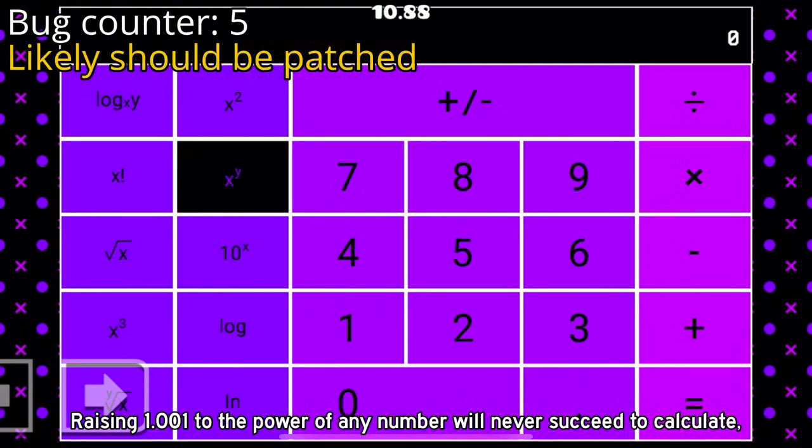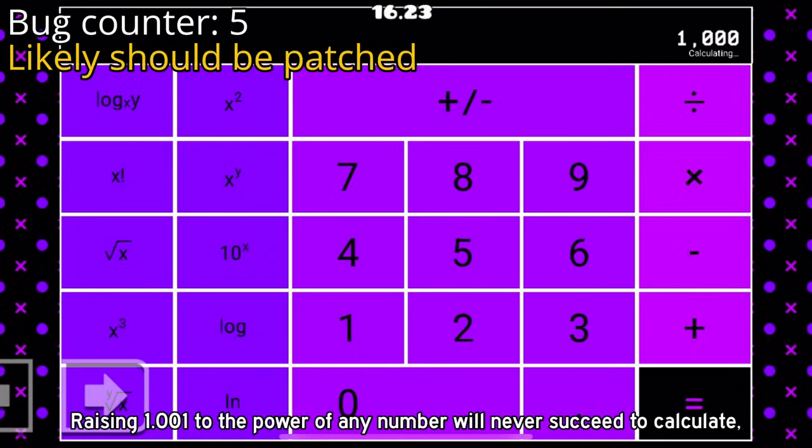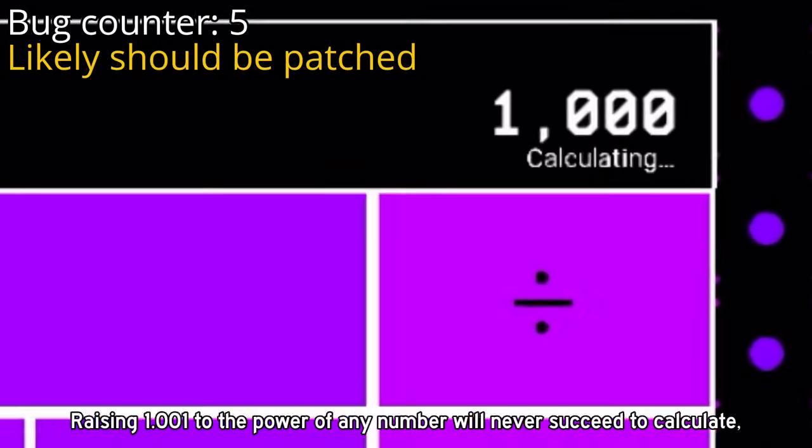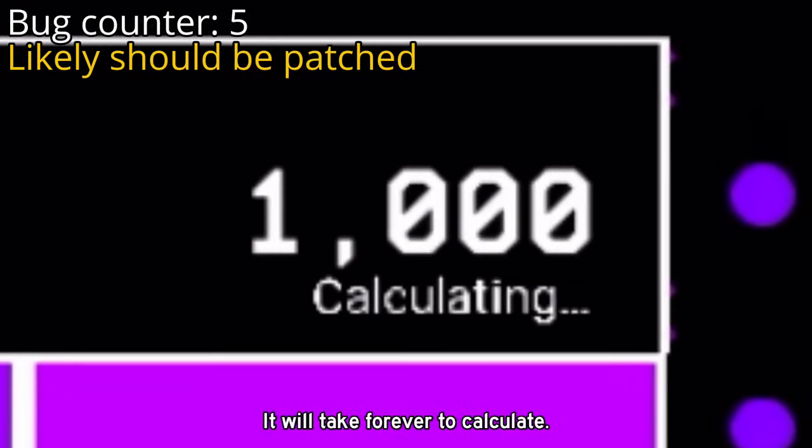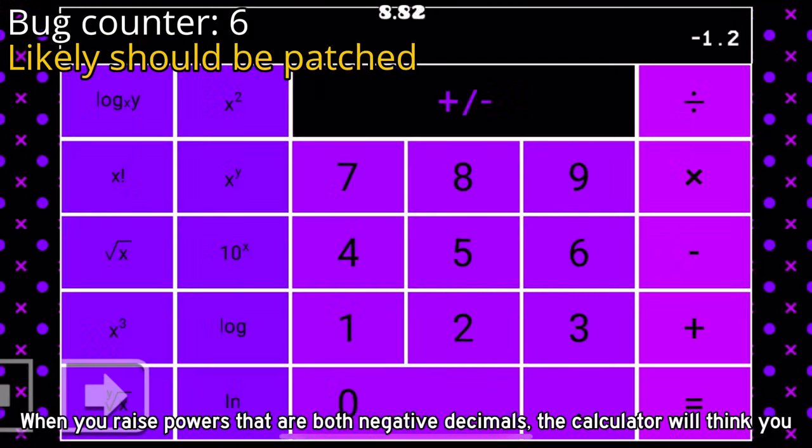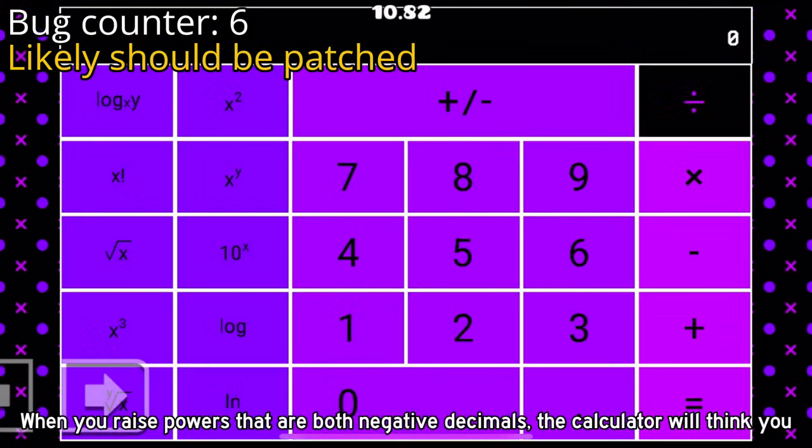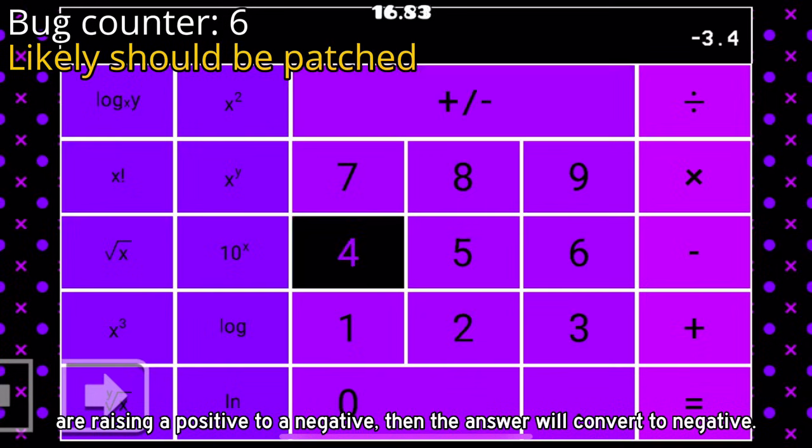Raising 1.001 to the power of any number will never succeed to calculate. It will take forever to calculate. When you raise powers that are both negative decimals, the calculator will think you are raising a positive to a negative, then the answer will convert to negative.